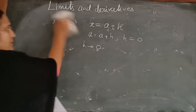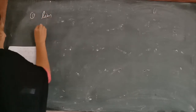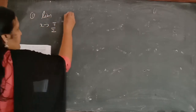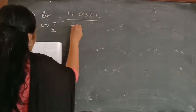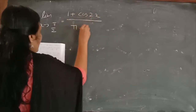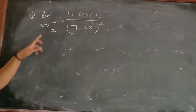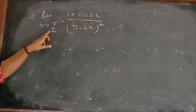Evaluate the following limits. The first one is: limit x tends to π/2 of (1 + cos 2x) / (π − 2x)². Here our value of x tends to π/2.